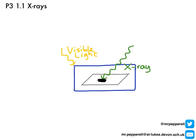Nowadays it's more common to replace the film with a flat panel detector which contains a CCD, or charge-coupled device. Sensors in the CCD convert x-rays into little flashes of visible light, which then create electrical signals that are converted into a digital image by a computer. This is exactly the same thing that happens inside a digital camera — the CCD detects visible light coming through the lens, but in this case the x-rays themselves produce the visible light which creates the image.